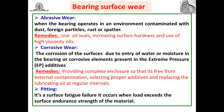There are three to four types of surface wear in rolling contact bearings. The first is abrasive wear. Abrasive wear of contacting surfaces occurs when the bearing operates in an environment contaminated with dust, foreign particles, rust, or spatter. This causes small crashes between parts — inner race, outer race, or rolling element — removing material and causing progressive wear known as abrasive wear.